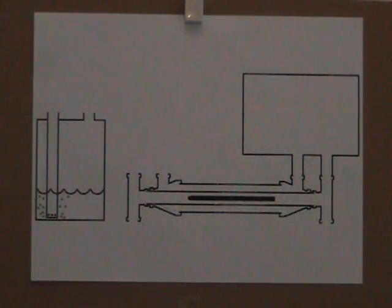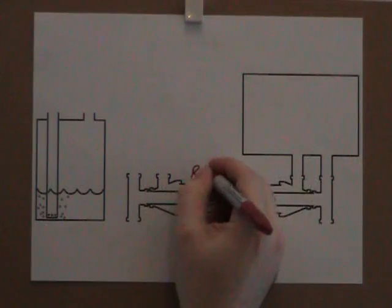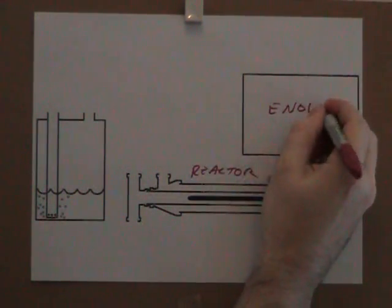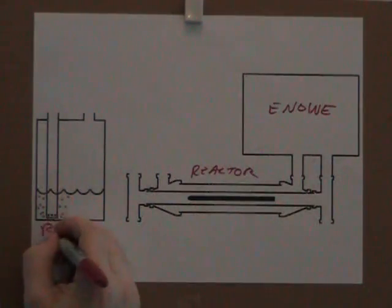Here's a simplified diagram of the GEET reactor. It's drawn to show the plumbing parts here that are prescribed by the online plans. This is the reactor here in the middle. Here's the engine on the right and this is the bubbler.